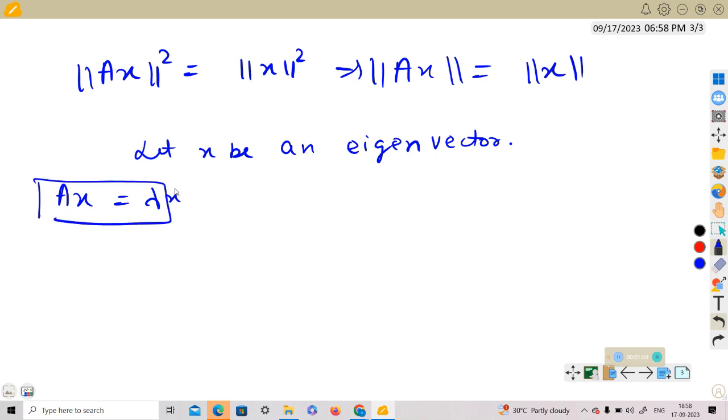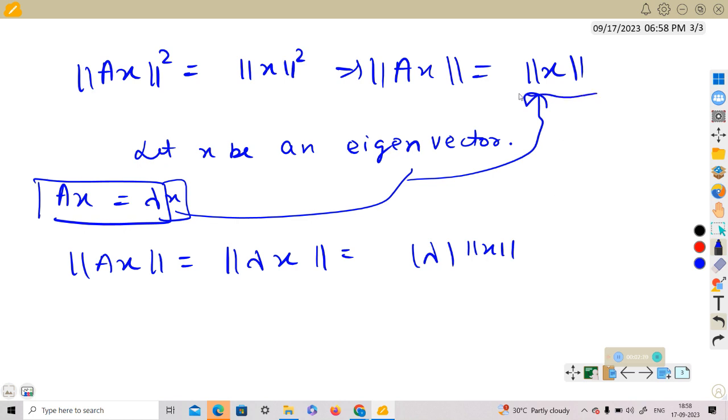Now putting this here, we get ||Ax|| is equal to ||λx||. This is equal to |λ| ||x||. We can just take out lambda, and this is equal to ||x|| from here. This implies |λ| is equal to 1.